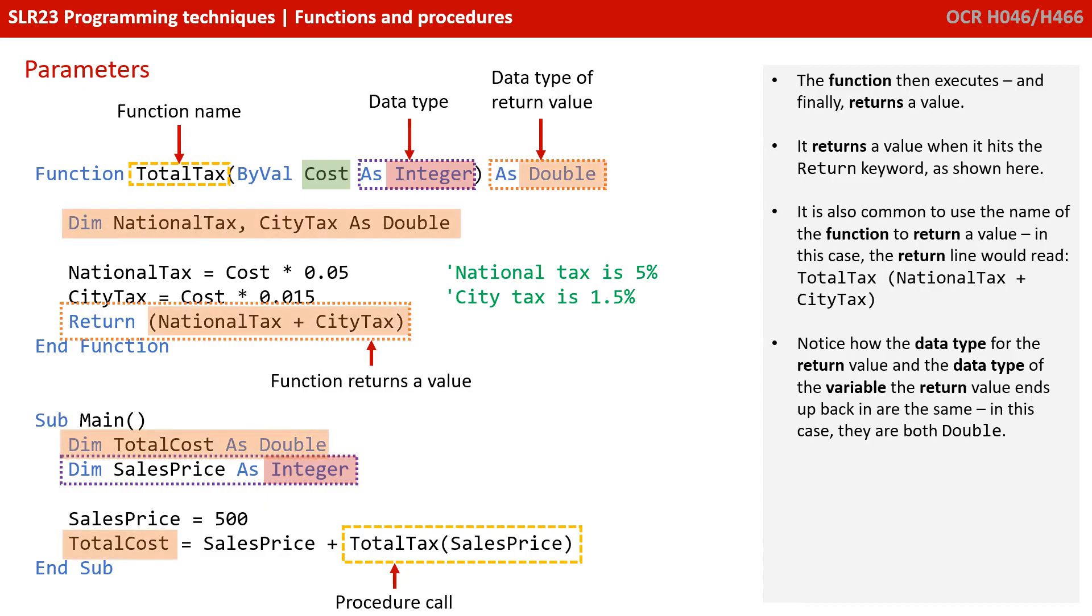The function then executes and finally we hit a return line. It returns a value when it hits the return keyword as shown here. It's also common to use the name of the function to return a value. In this case, the return line would have read total tax brackets, national tax plus city tax close brackets. Notice how the data type of the return value and the data type of the variable the return value ends up back in are the same. In this case, they're both doubles.